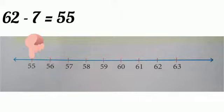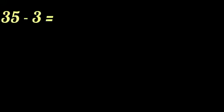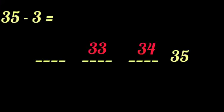Let us see another method. Subtraction by counting. We should put 3 blank spaces before 35 because we are subtracting 3 from 35. See, like this. Then count backward to get the answer. So, we can say 35 minus 3 is 32.